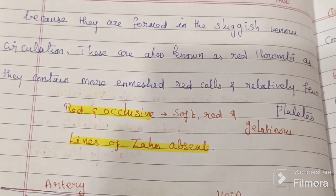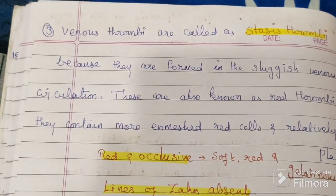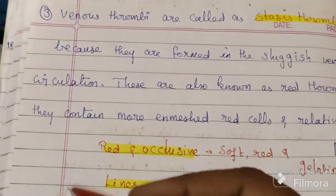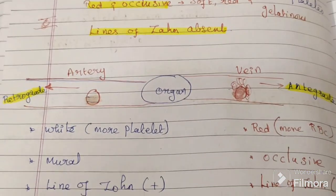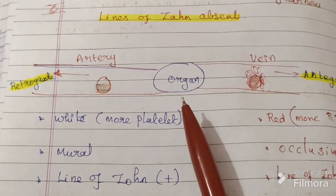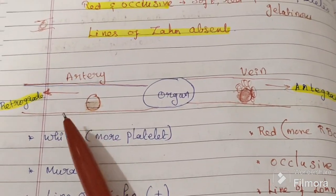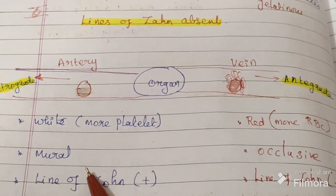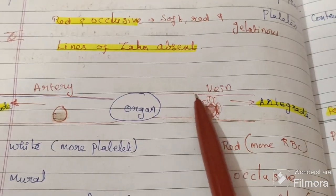Venous thrombus is red in color because there are no lines of Zahn — only red, fully occupying the vessel, making it occlusive. That means the clot fully occupies the blood vessel. Arterial thrombus is white or yellowish in color because of a greater amount of platelets, while venous thrombus is red because of RBCs. Arterial is mural — partially affected — while venous is occlusive, fully affected.